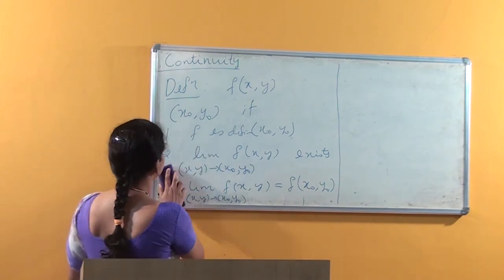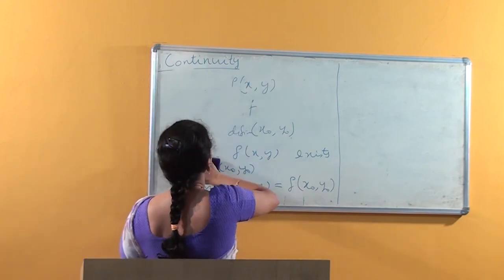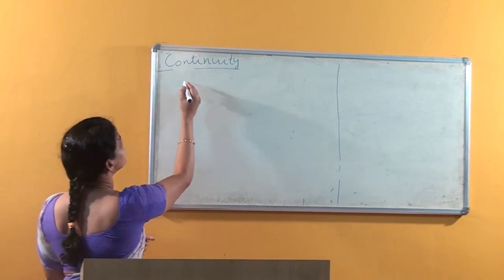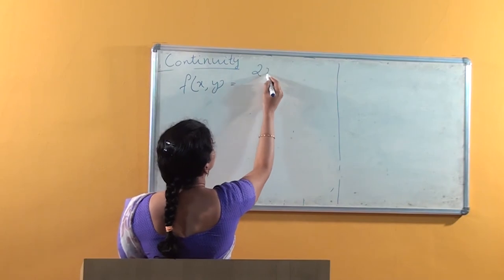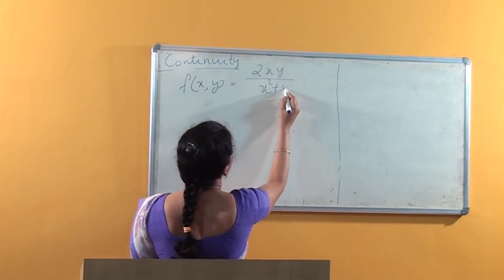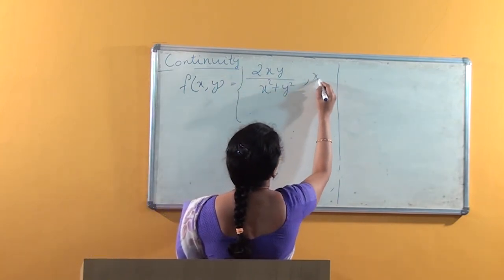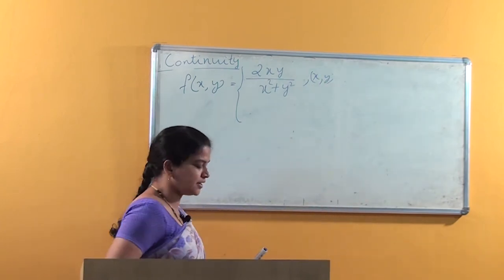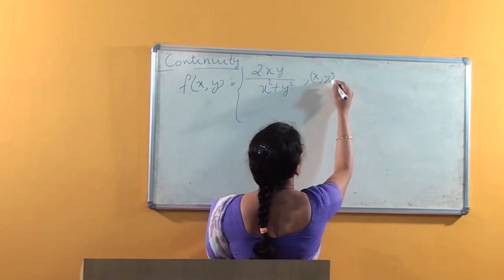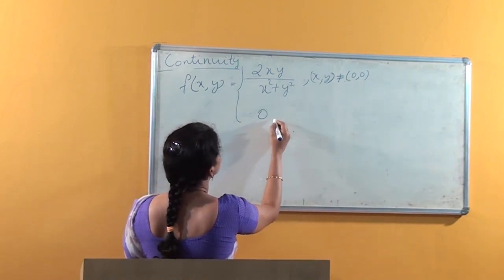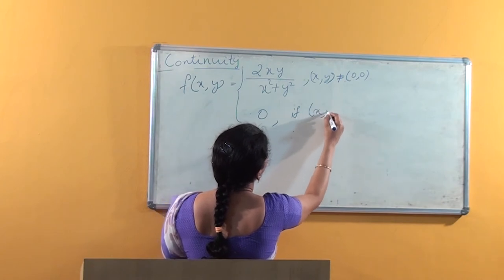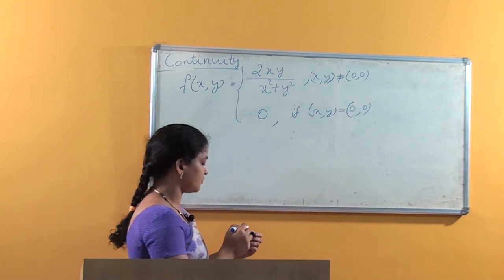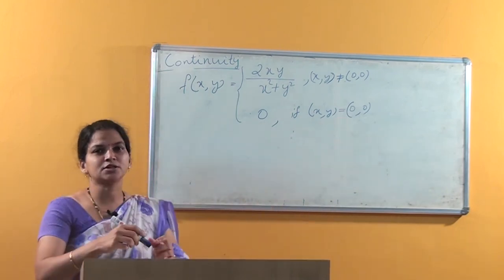Let's take one example and check the continuity of a function. Consider the function f(x, y) equal to 2xy divided by (x² + y²) if (x, y) is not equal to (0, 0), except at the origin, and 0 if (x, y) is equal to (0, 0).